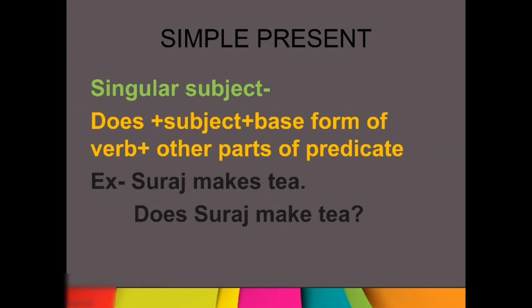Let's clear it out through an example. Suraj makes tea. Suraj kia banata hai? Tea banata hai. Ye simple present tense mein hai humara sentence. How we will make the question? Because Suraj is one — that means singular subject hai humara. So how we will make it? Does plus subject — Suraj — base form of the verb — Make — plus rest of the sentence — tea — and then question mark. Does Suraj make tea? Question mark.